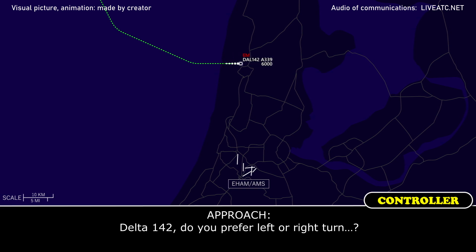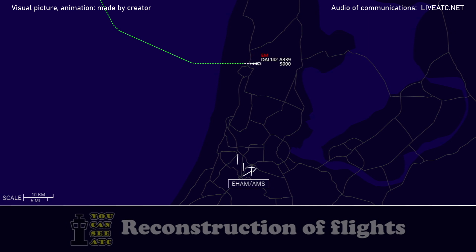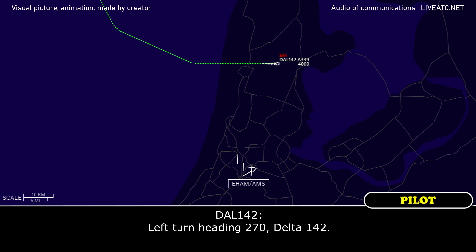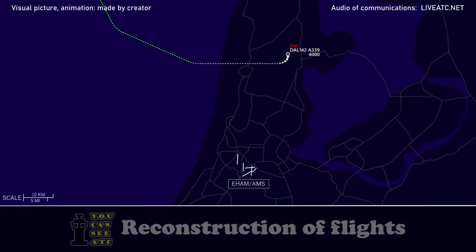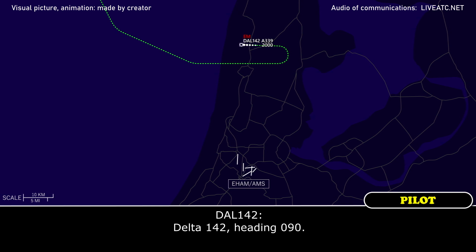Delta 142, do you prefer left or right turns, or doesn't matter? Delta 142, make a left turn, heading 270. Delta 142, left turn again, heading 090. We'll keep you close to the ILS. Delta 142, heading 090.